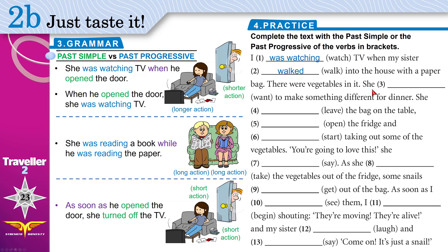'There were vegetables in it. She want to make something different for dinner.' This is one sentence with only one action. We use past simple. Why? 'Want' is a stative verb — we don't use stative verbs with progressive tenses like present progressive or past progressive. So: 'She wanted to make something different for dinner.'